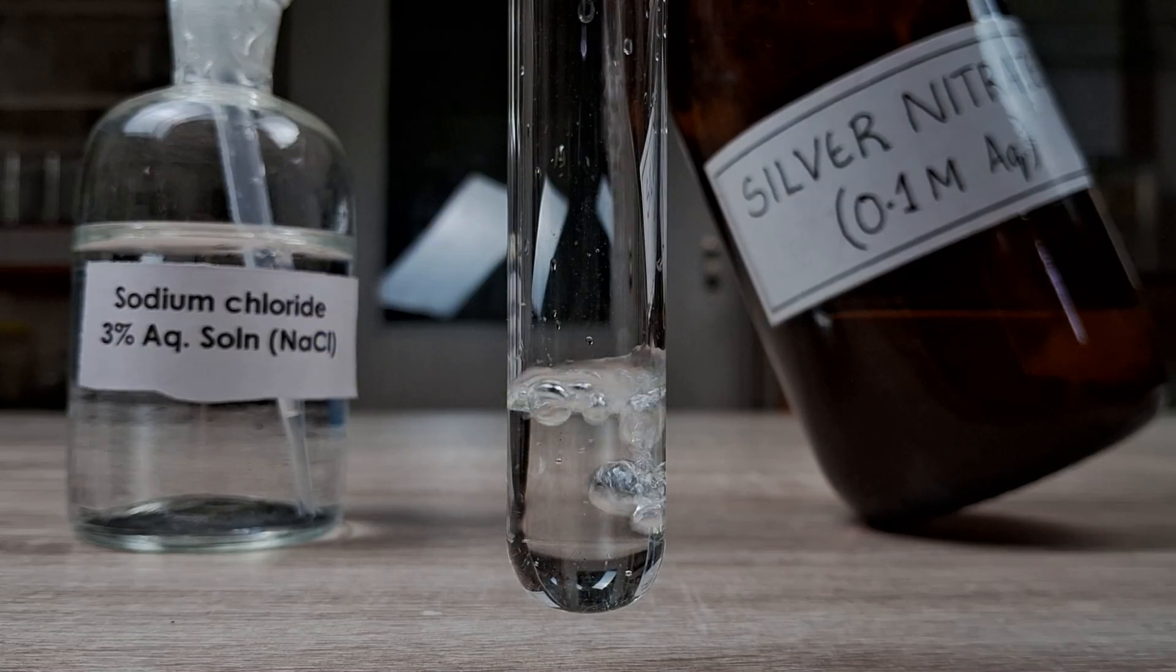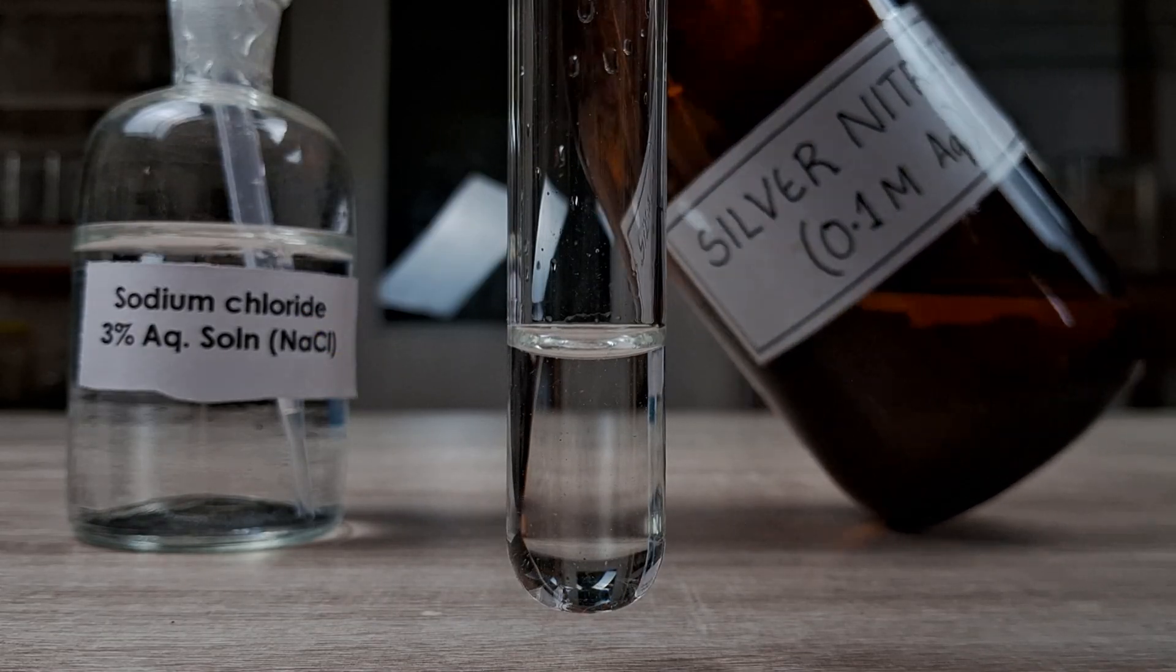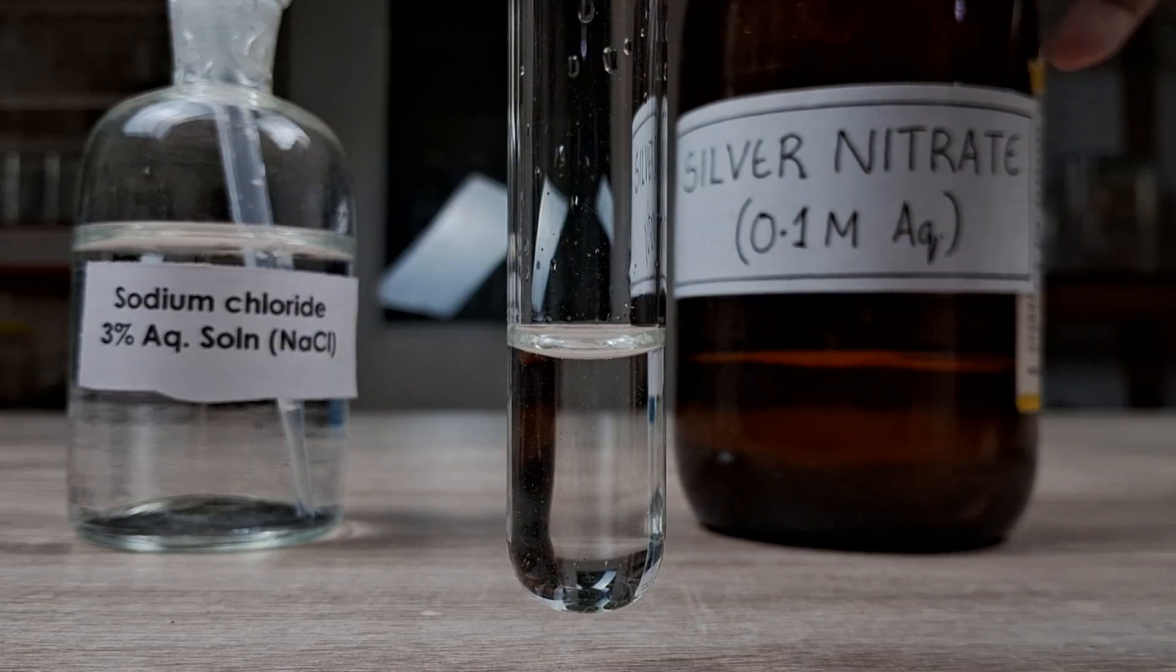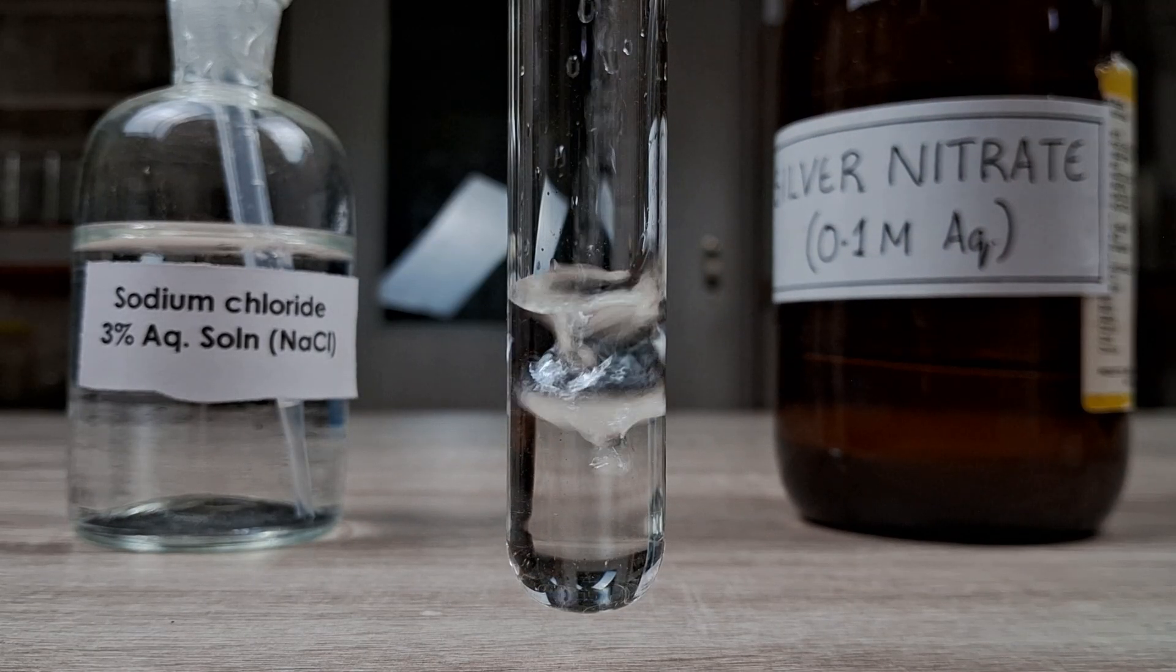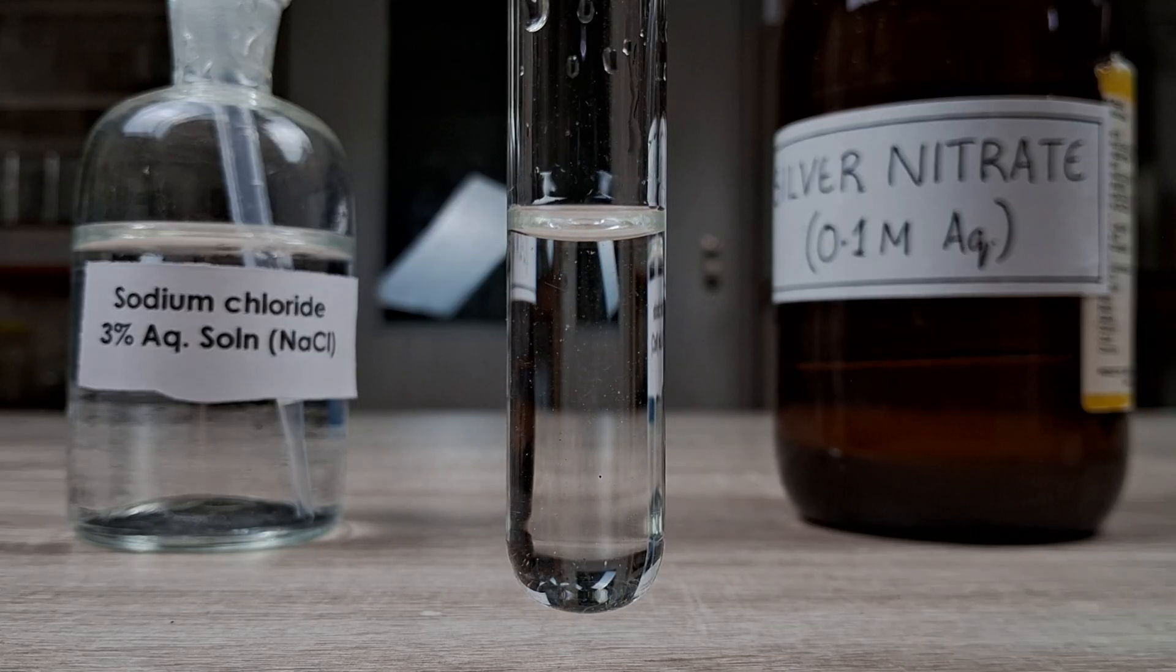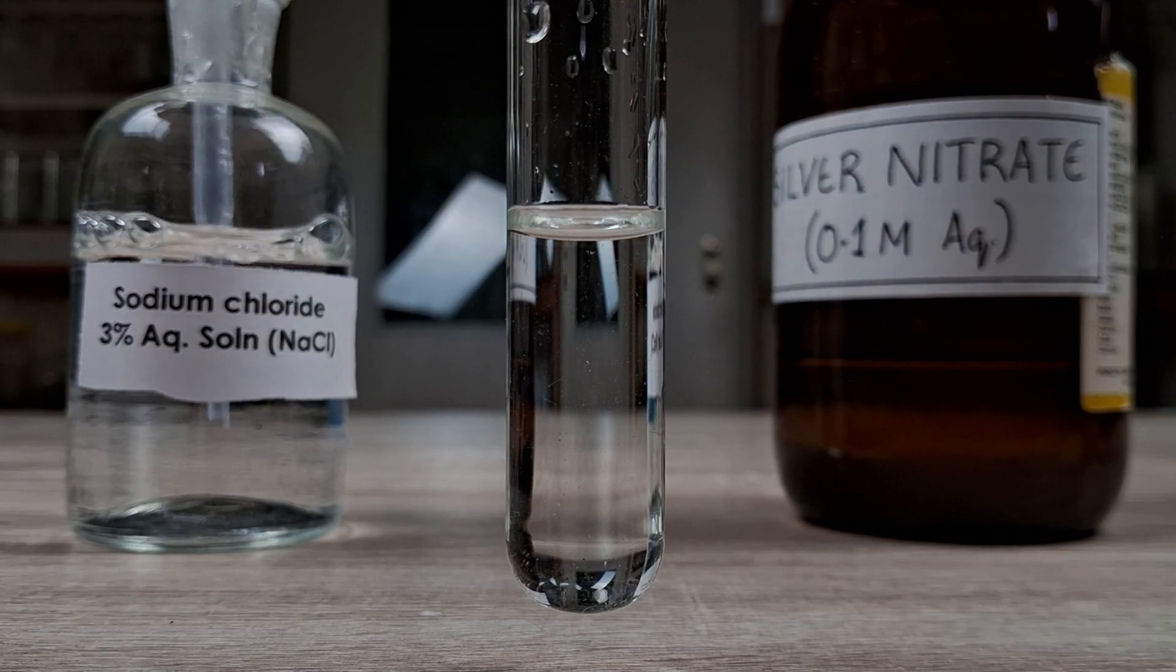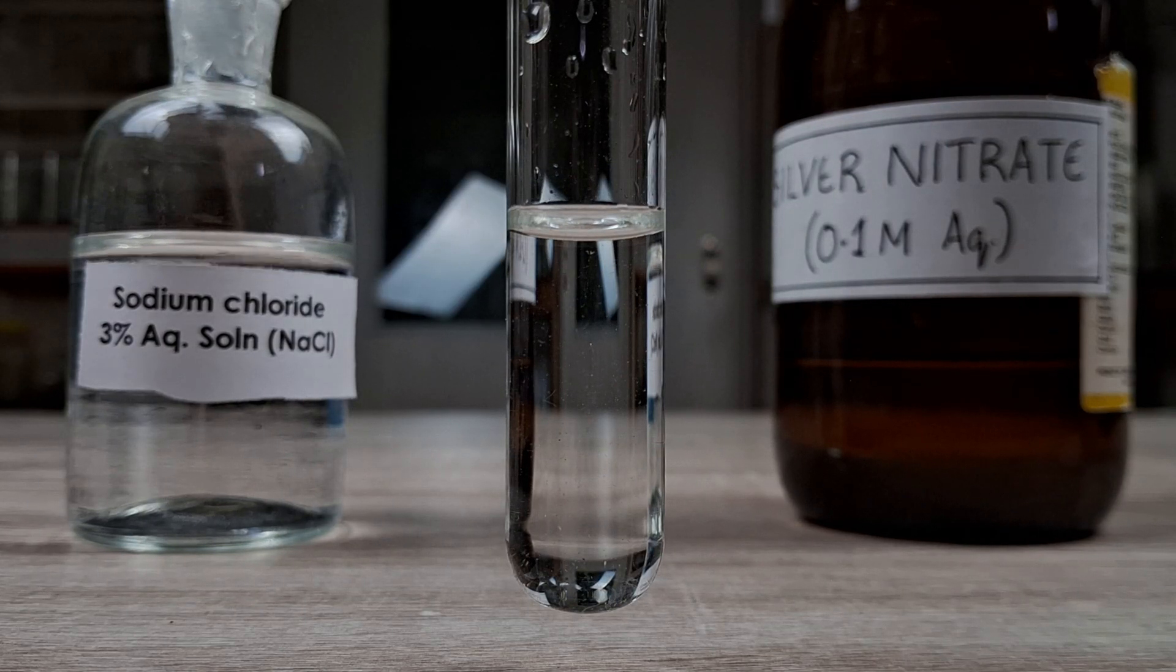Begin the experiment by taking a few milliliters of either one of the two solutions in the test tube. Here I'm taking the silver nitrate solution. Next, start adding the other solution, in my case sodium chloride, dropwise to the solution in the test tube.